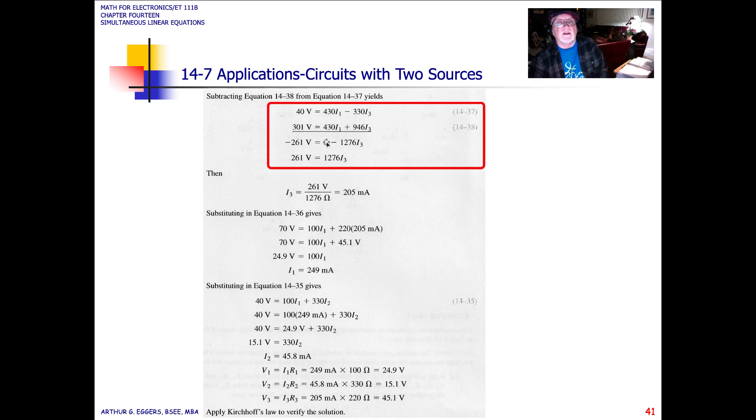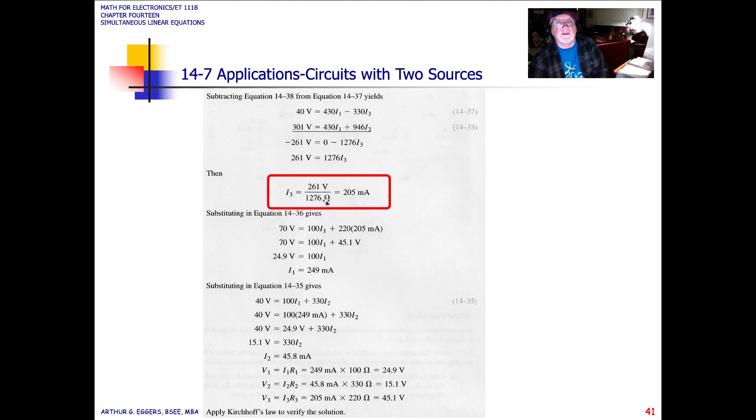Now when I do my subtractions, I end up with minus 261 equals minus 1276 I3. That's convenient. Both of them are minuses, so they normalize out to a positive value. I3 then equals the quotient, 261 volts divided by 1267 ohms, or 205 milliamps.